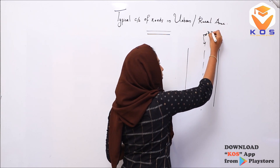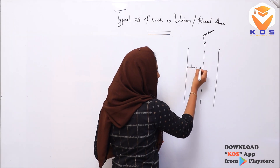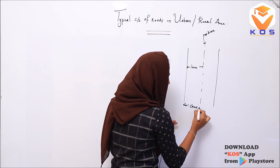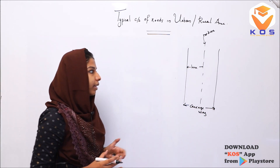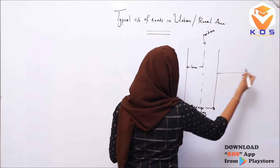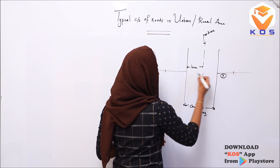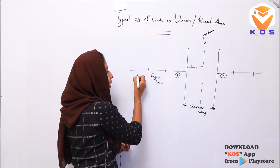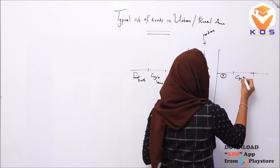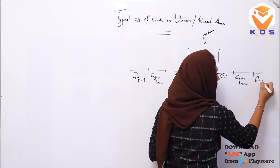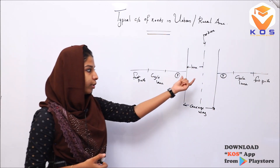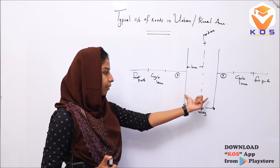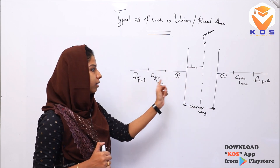The median strip is used in the middle to separate traffic — it divides the road into a single line and double line so that two lanes do not conflict. In a typical urban cross-section, looking at both sides of the road, there is parking, a cycle lane, and a footpath. The median strip divides the two carriageways.